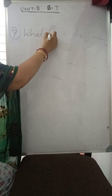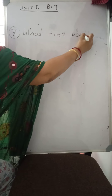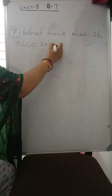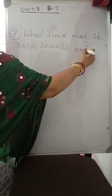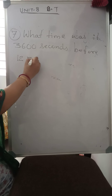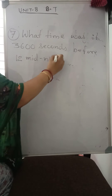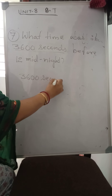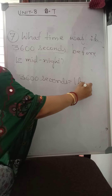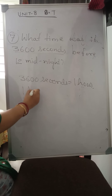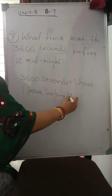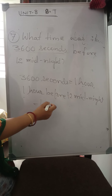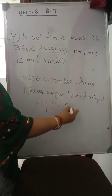Question No. 7: What time was it 3600 seconds before twelve midnight? Since 3600 seconds equals one hour, the question becomes one hour before twelve midnight. Twelve minus one is eleven. So it is eleven p.m.